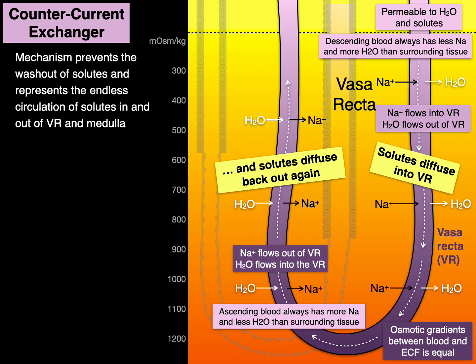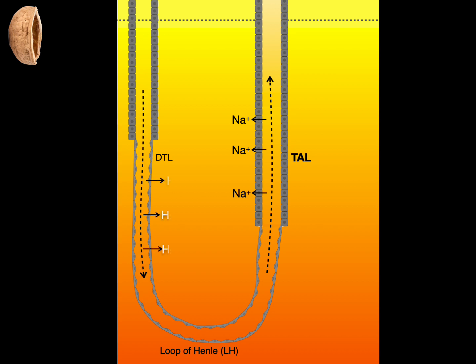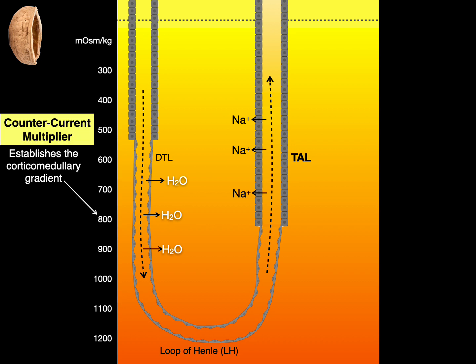So this mechanism, the countercurrent exchanger prevents the washout of solutes and represents the endless circulation of solutes in and out of the vasa recta and the medulla. In a nutshell, the thick ascending limb pumps sodium into the interstitium. The descending thin limb has water that follows to the salty sodium. This is called the countercurrent multiplier and it establishes the corticomedullary gradient.